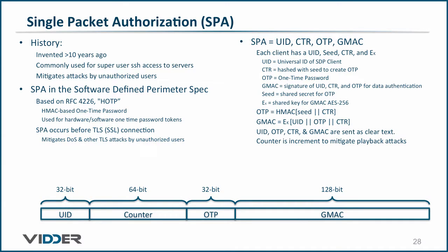The packet of the single packet authorization consists of the universal ID of the SDP client, so we know which client is trying to be authorized; a 64-bit counter, which is the variable input to the algorithm that changes for each attempt; the one-time password generated by HOTP, i.e. the value we are looking for; and a GMAC of the first three to verify the integrity of the packet.